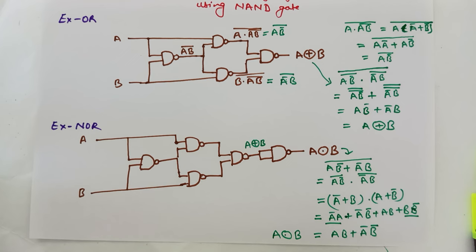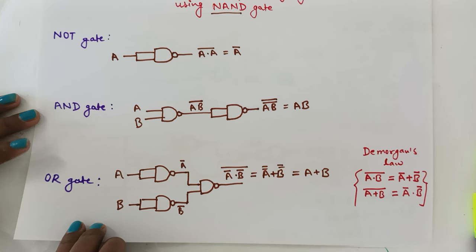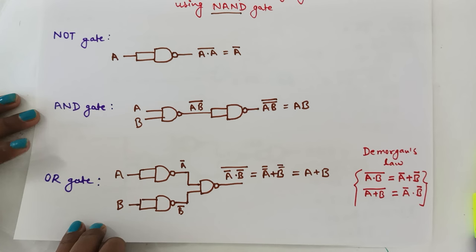We know this equals A XNOR B. So in this lecture we have seen the design of NOT gate, AND gate, OR gate, XOR gate, and XNOR gate with NAND gate. Thank you.